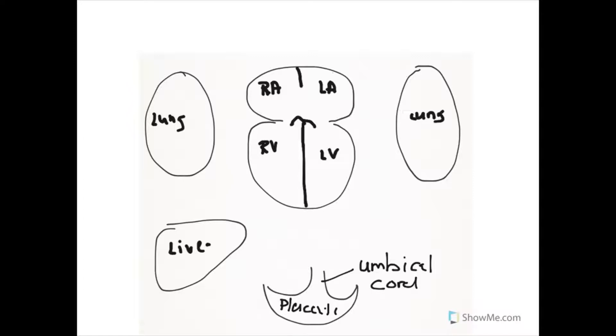The placenta is the only location of any type of transfer between fetal and maternal blood. We'll use squiggle lines to reference the blood vessels in the placenta, both venous or deoxygenated blood and oxygenated blood.